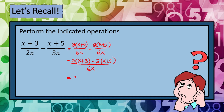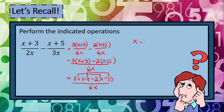We have 3 times x, that's 3x. 3 times 3, we have positive 9. Negative 2 times x, we have negative 2x. Negative 2 times 5, we have negative 10, all over 6x. Then we combine similar terms: 3x minus 2x is x. Then 9 plus negative 10, we have negative 1, over — copy the denominator — 6x.